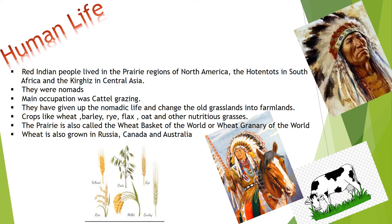The prairie is also called the wheat basket of the world, or the wheat grain of the world. Wheat is also grown in Russia, Canada and Australia.